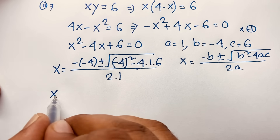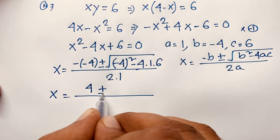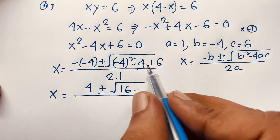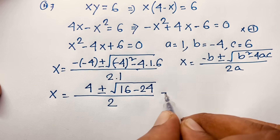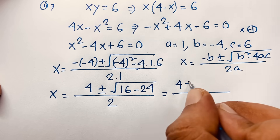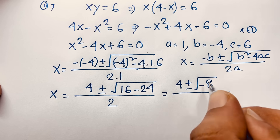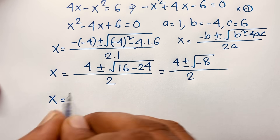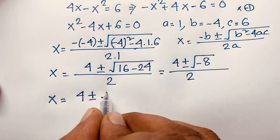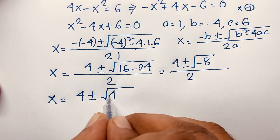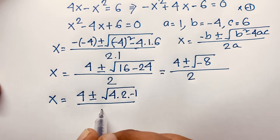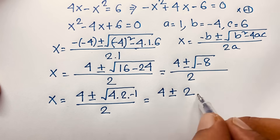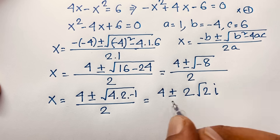So x equals 4 plus or minus square root of 16 minus 24 over 2. That gives 4 plus or minus square root of negative 8 over 2. Simplifying: square root of negative 8 equals square root of 4 times 2 times negative 1, which is 2 times square root 2 times i over 2.